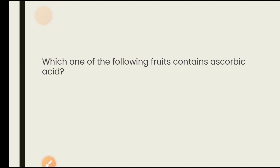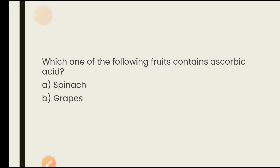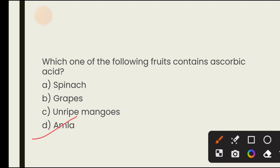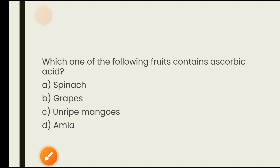Which of the following foods contain ascorbic acid? Options are spinach, grapes, unripe mango, aamla. Ascorbic acid is found in aamla. The answer is aamla.